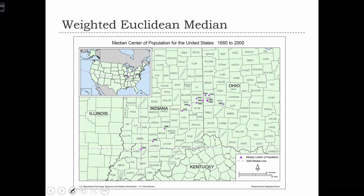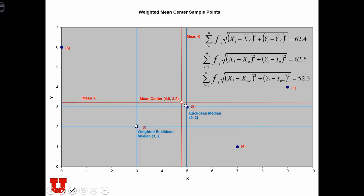Here's an example of the weighted Euclidean median of the population as it traces westward from 1880 to 2000. We see that it is slightly different to the graph that we had for the mean center of the population over the same time period. Here we have the weighted Euclidean median based on the weights that we had in the previous case.